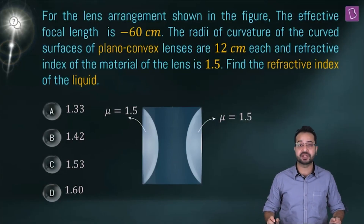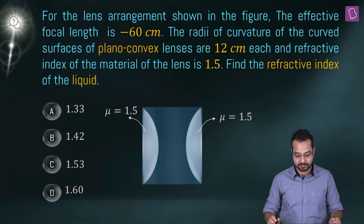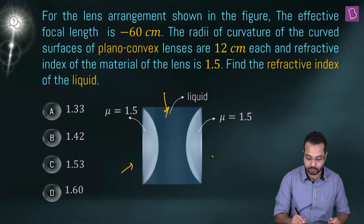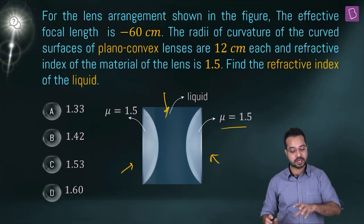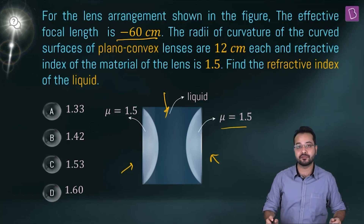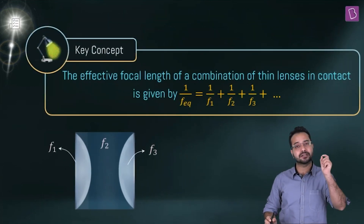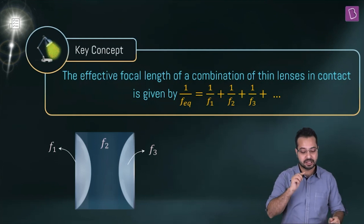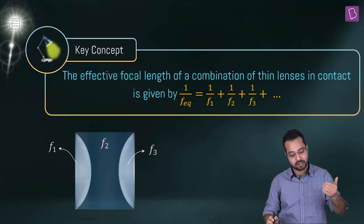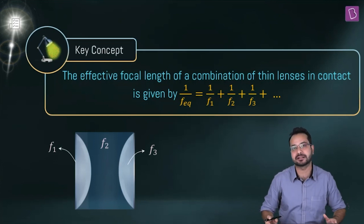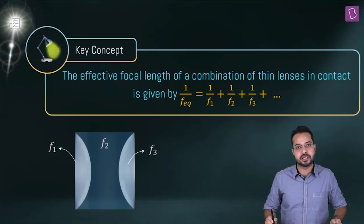A liquid is sandwiched between two plano-convex lenses of refractive index 1.5. The effective focal length of the combination is minus 60 cm, and the radii of curvature are 12 cm. We need to find the refractive index of the liquid. The key formula is 1/F_eq = 1/F1 + 1/F2 + 1/F3.